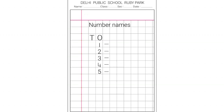For number 3, you will write the name: capital T, small h, r, double e — Three. For number 4, you will write capital F, small o, u, r — Four. And the last number 5, which is also in the column, you will write the name as capital F, small i, small v and e — Five.